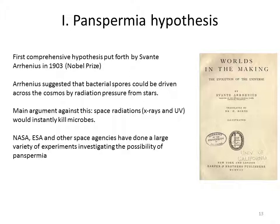Let us look at the so-called panspermia hypothesis first. This idea was first put forth in a comprehensive manner by the Nobel laureate Svante Arrhenius in 1903. He suggested that bacterial spores could be driven across the cosmos by radiation pressure from the stars. The main argument against this first version of panspermia is that unprotected microbes would be instantly killed in space by hard radiation. The panspermia hypothesis has since been refined many times to account for this and other challenges.